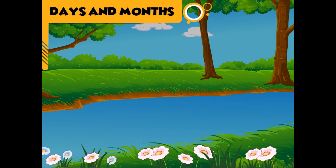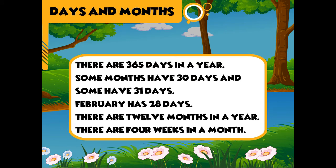Days and months. There are 365 days in a year. Some months have 30 days and some have 31 days. February has 28 days. There are 12 months in a year. There are 4 weeks in a month.